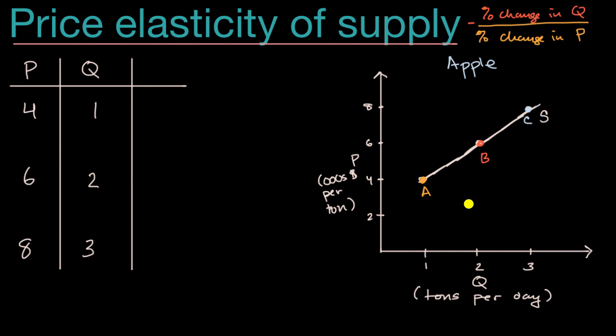So let's think about our price elasticity of supply as we go from point A to point B. Well on the supply schedule, point A is this point right over here, our price is four, our quantity is one, and point B is right over here. So let us calculate from point A to point B our price elasticity of supply.